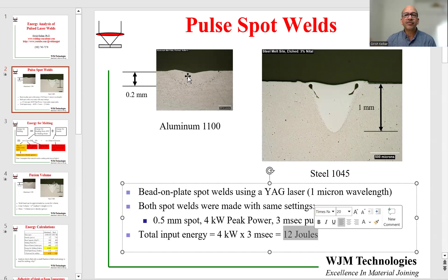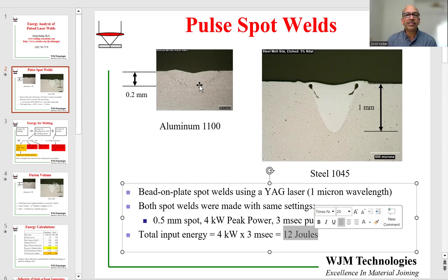These are the two cross sections made through the center line along the diameter of the spots. We can see that the depth of welding in aluminum for the same amount of energy is only 0.2 millimeters, whereas the depth of melting or fusion zone in steel is 1 millimeter. We can obviously see a big difference in the volume of the two. Now we want to analyze how much energy would be required to melt each volume, and for that we'll need to use the energy equations.